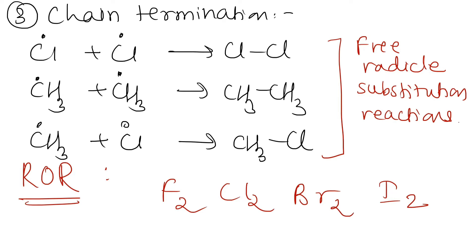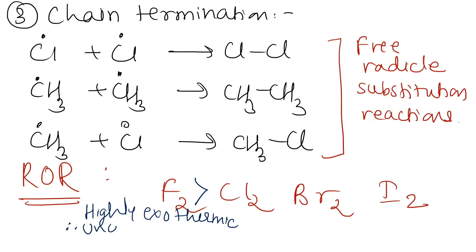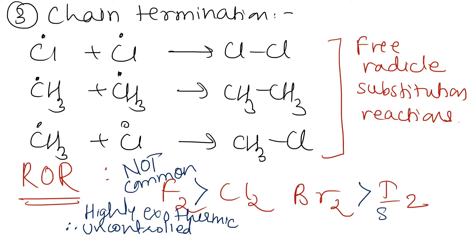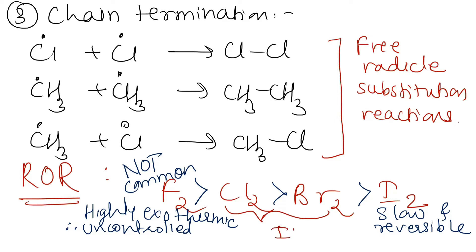Regarding the rate of reaction of halogens — F₂, Cl₂, Br₂, and I₂: F₂ is highly reactive and gives a highly exothermic, very uncontrolled reaction, so fluorination is not a common reaction. I₂ gives a slow and reversible reaction. Therefore, compared to fluorine and iodine, the two important halogens in halogenation are chlorine (Cl₂) and bromine (Br₂).